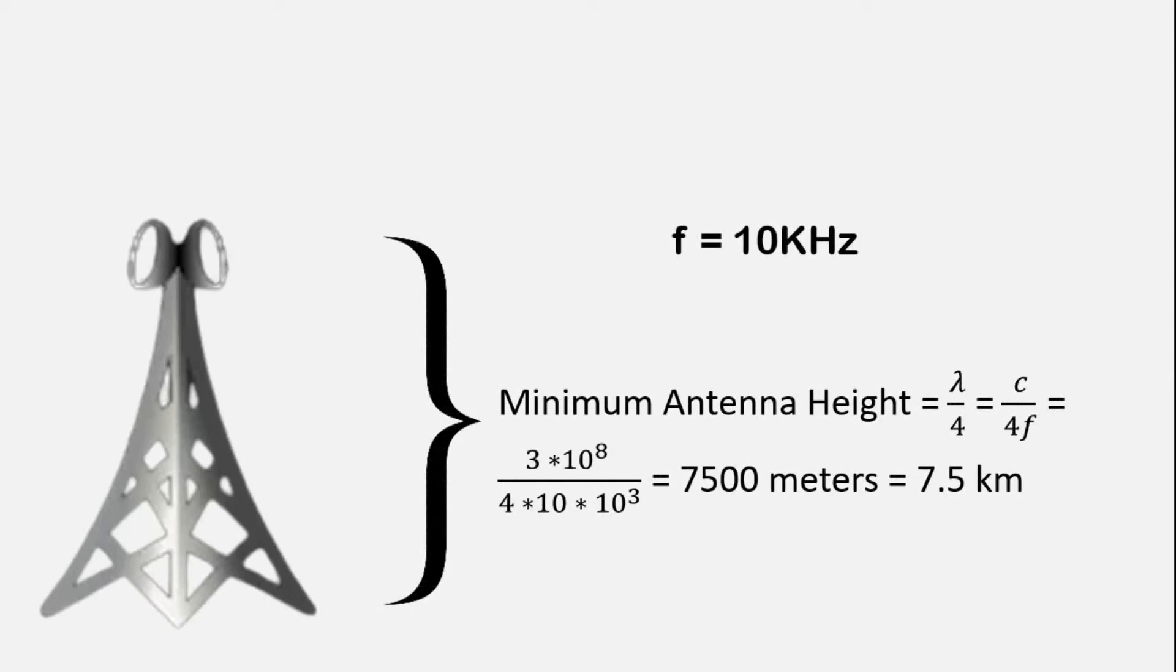The minimum antenna height required to transmit a baseband signal of 10 kHz is calculated like this way. So the minimum antenna height equals to lambda by 4, and we know that the value of lambda is C by F. So putting this value we are having here C by 4F.